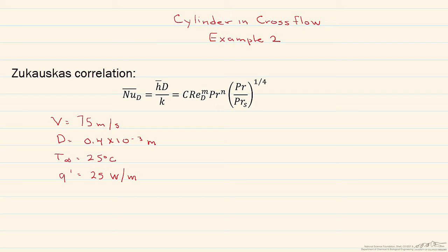In this screencast, we'll look at a second example of using a correlation to find, in this case, a surface temperature for a cylinder in cross flow.